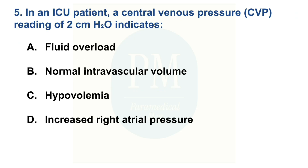In an ICU patient, a central venous pressure reading of 2 cm H2O indicates — Option A: fluid overload. Option B: normal intravascular volume. Option C: hypovolemia. Option D: increased right atrial pressure. The correct option is Option C: hypovolemia.